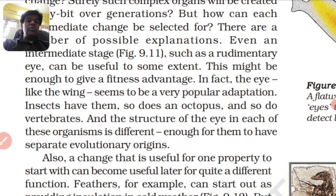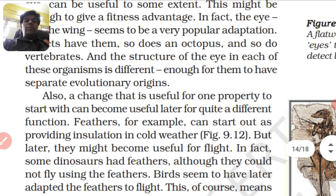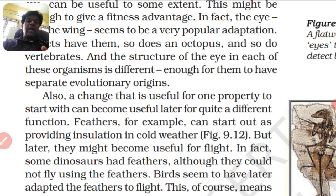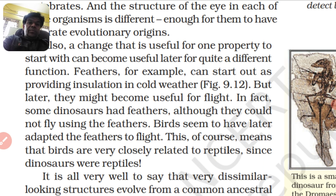A change that is useful for one property to start with can become useful later for quite different functions. Feathers, for example, can start out as providing insulation against cold weather, but later they might become useful for flight. In fact, some dinosaurs had feathers although they could not fly using them. Birds seem to have later adapted the feathers for flight.